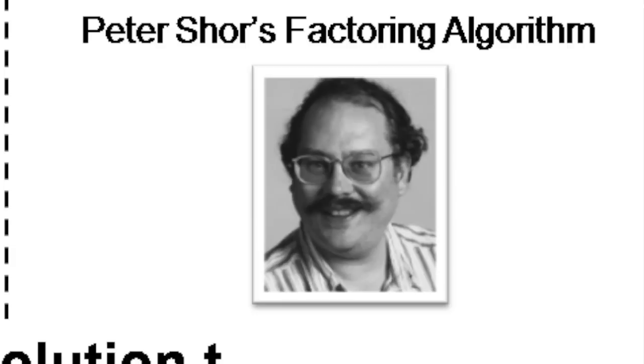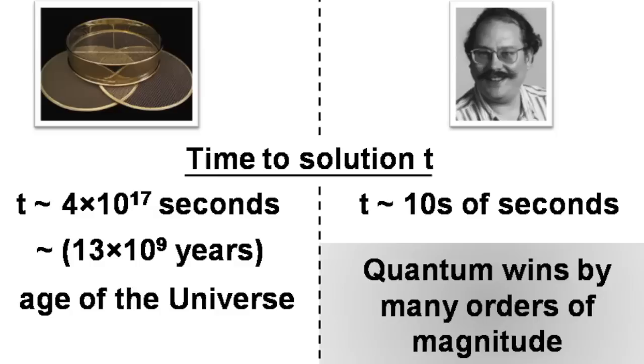It's going to take about the age of the universe for you to solve it with the classical general number field sieve, whereas it will be on the order of seconds here with Peter Shor's algorithm. It's this image that really motivated me to actually do this experiment. So why is this relevant or why should anyone care?